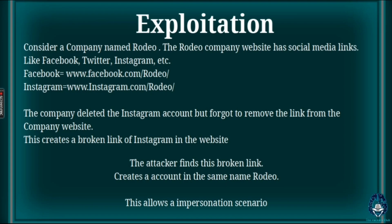What the attacker does is find this broken link, create an account with the same name as the company, and set it up. When any victim or user clicks on that broken link, they are redirected to the attacker's account made using the company name. This allows an impersonation scenario.